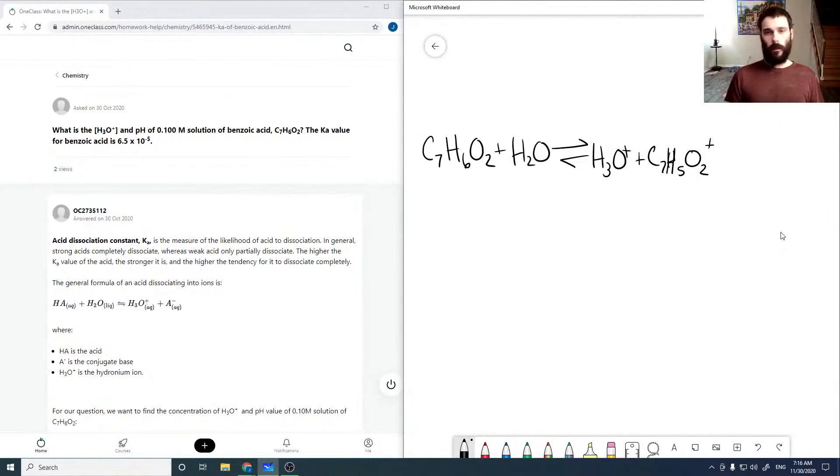And it's given that our Ka is 6.5 times 10 to the minus 5. And then our starting concentration is 0.100 molar.